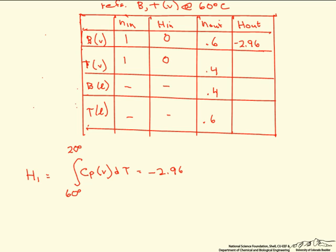If we figure out H2, it's exactly the same as H1, except the Cp is different. So when we calculate that, we end up with minus 5.95.